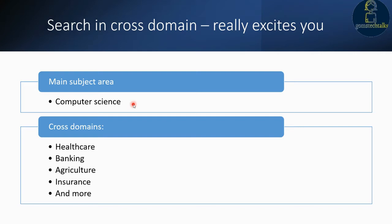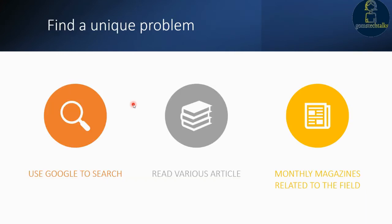I chose the healthcare industry, and within it you have to explore more to find a unique problem. In healthcare, I decided I wanted to predict some disease. If you look at cancer, it is already researched by many, and the same is true for diabetes and autism — many researchers are working in those areas.